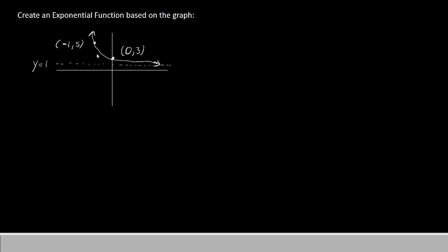This question says to create an exponential function based on this graph in front of us. This graph has a horizontal asymptote at y equals 1 and passes through the points negative 1, 5 and 0, 3. When you're given a coordinate axis and a graph, you want to start from this framework.